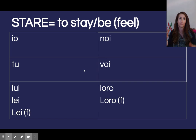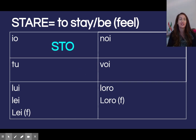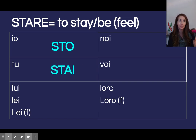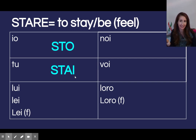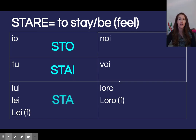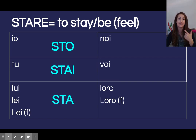Pausa. We'll pause there. Io sto. Tu stai — stare attenti, now here un po' diverso, a little different: S-T-I-A. But it does still end in la lettera I. Lui/lei ends in A: lui, lei sta. So far — io sto, tu stai, lui/lei sta.